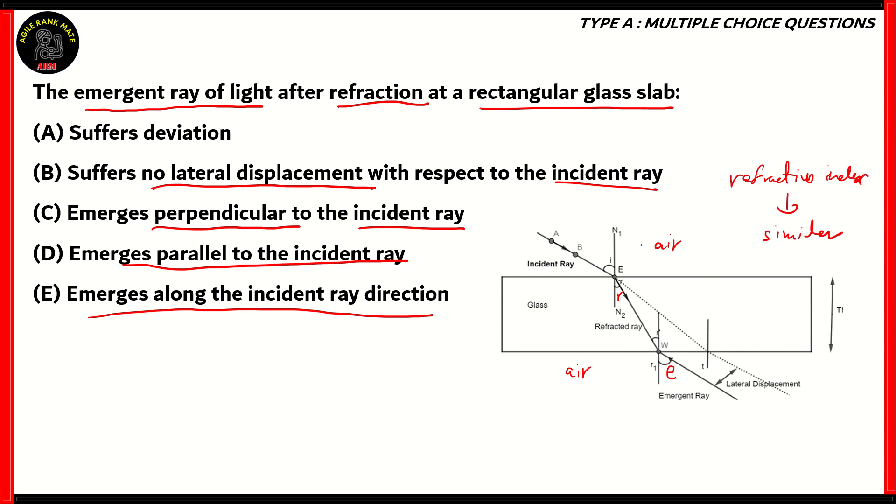The reason being that if you go from air to glass, you suffer a refractive index N21. If you go from glass to air, you suffer from the refractive index N12. So because of that, the light suffers deviation. So the light goes closer to the normal here and then it goes farther to the normal from there. And as you can see, due to this particular refraction of light, there is a lateral displacement.